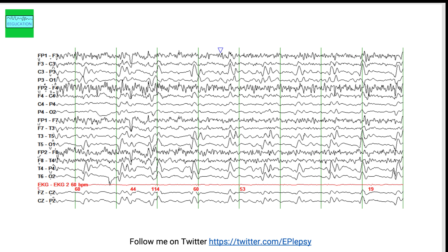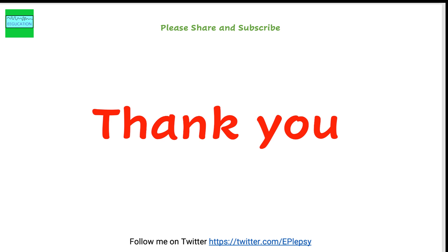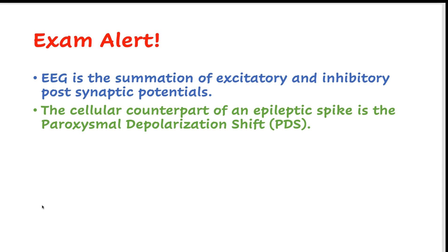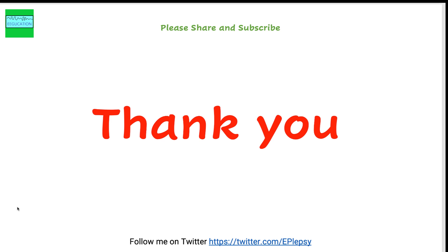I hope this was useful for preparing for your neurology or EEG exams. A few reminders from previous tutorials: EEG is the summation of excitatory and inhibitory postsynaptic potentials — don't just say it is the electrical activity of the brain. And if someone asks what the cellular counterpart of an epileptic spike is, keep in mind that it is the paroxysmal depolarization shift. Thank you very much for your attention — this is the end of the tutorial.